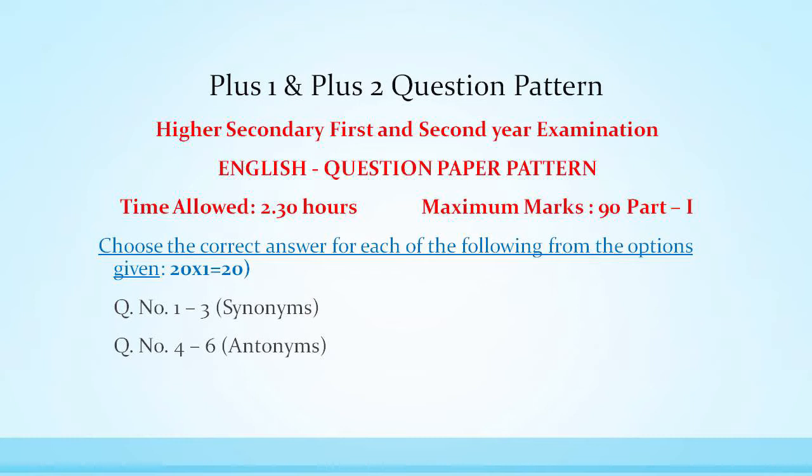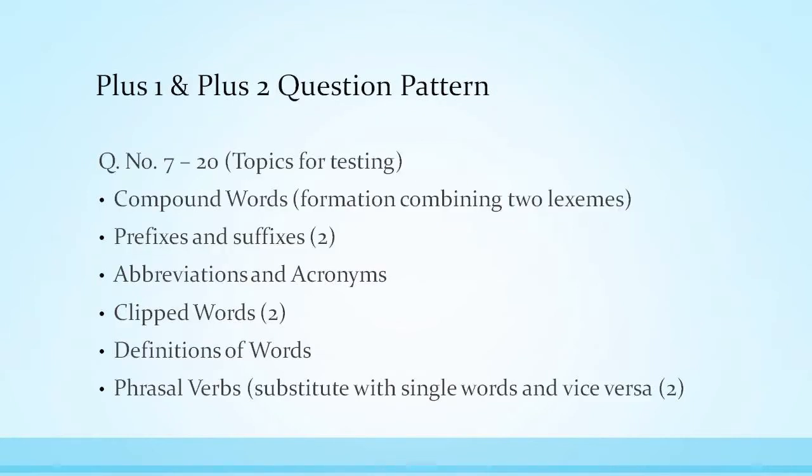Choose the correct answer for each of the following from the options given below. 20 into 1 is 20 marks. Question number 1 to 3 covers synonyms. Question 4 to 6 covers antonyms. Here you will be given options to select from.